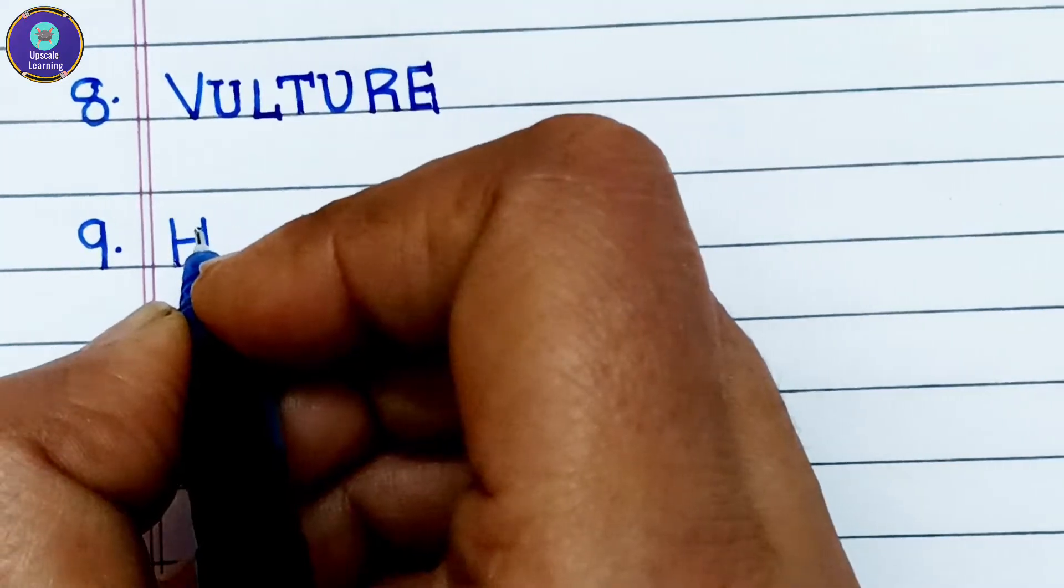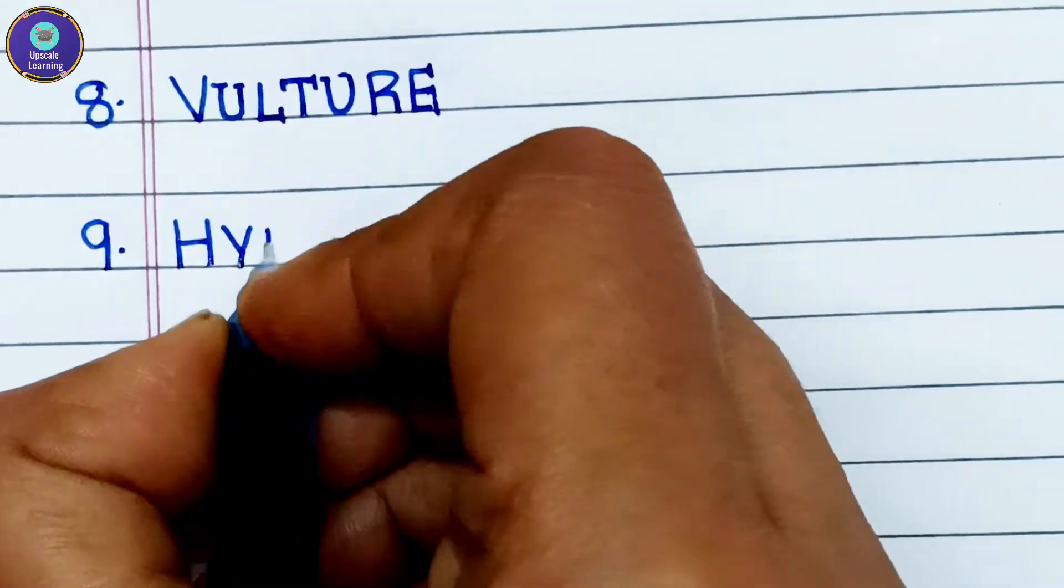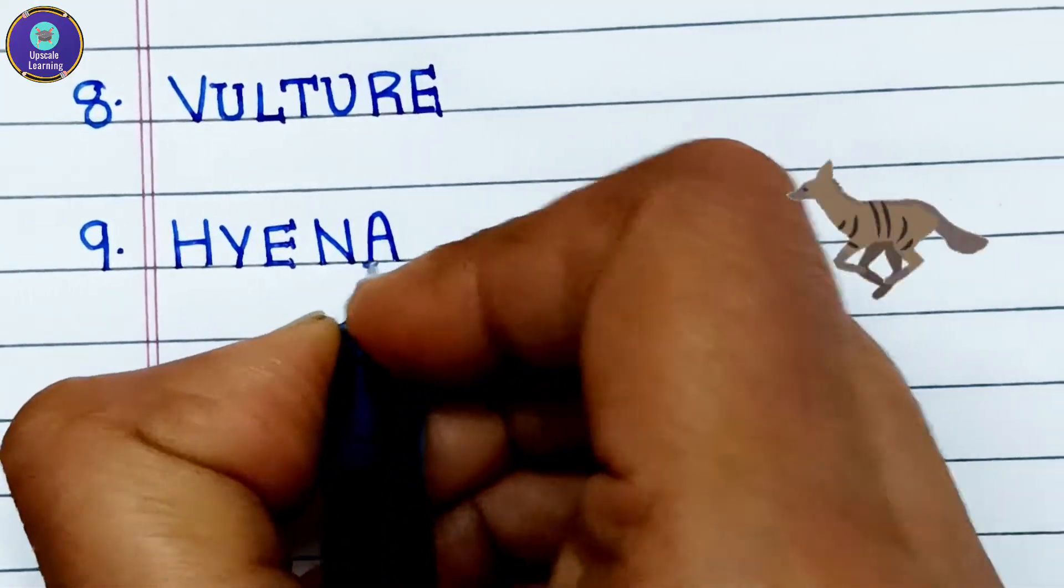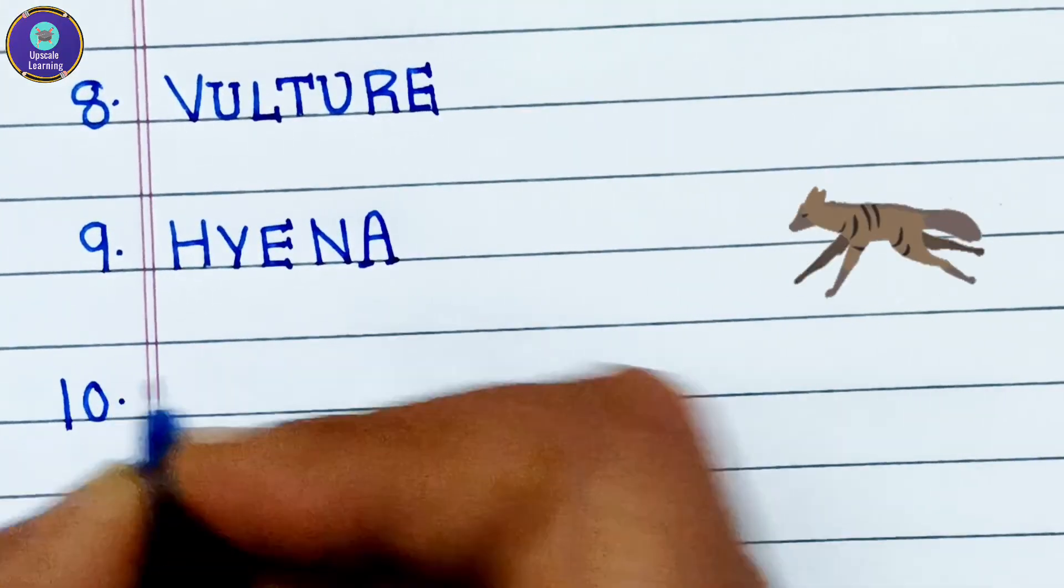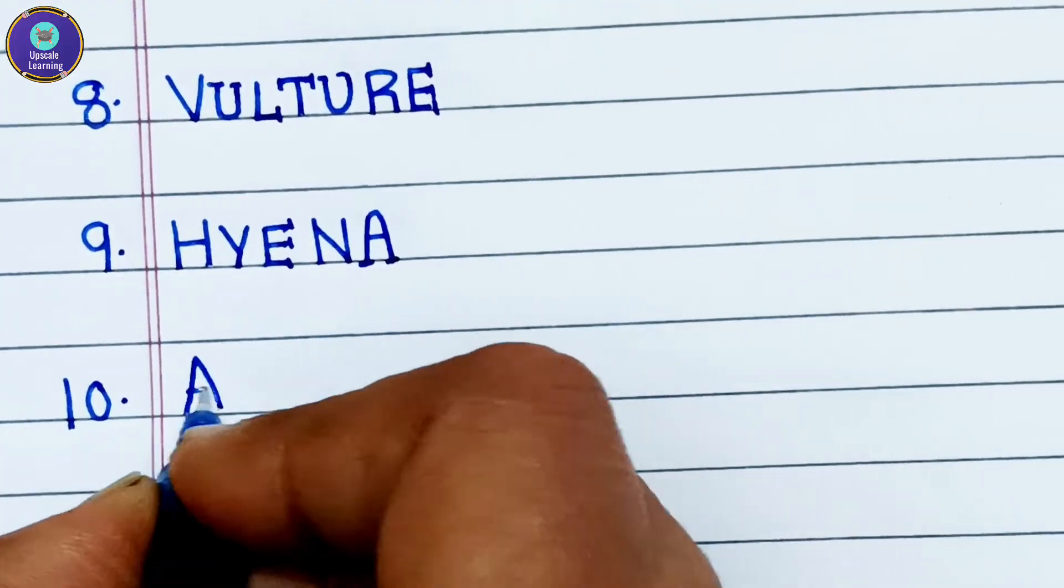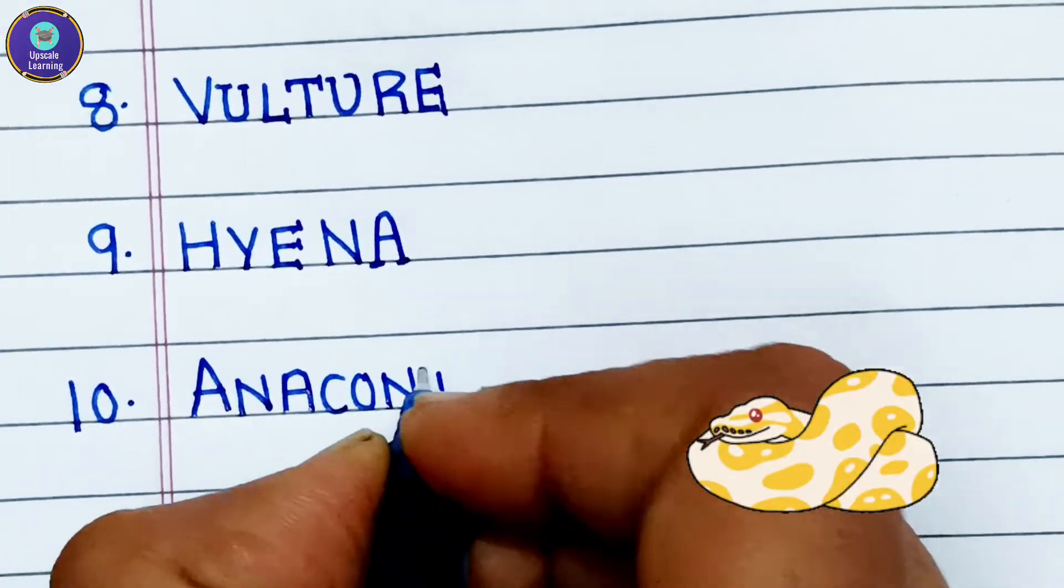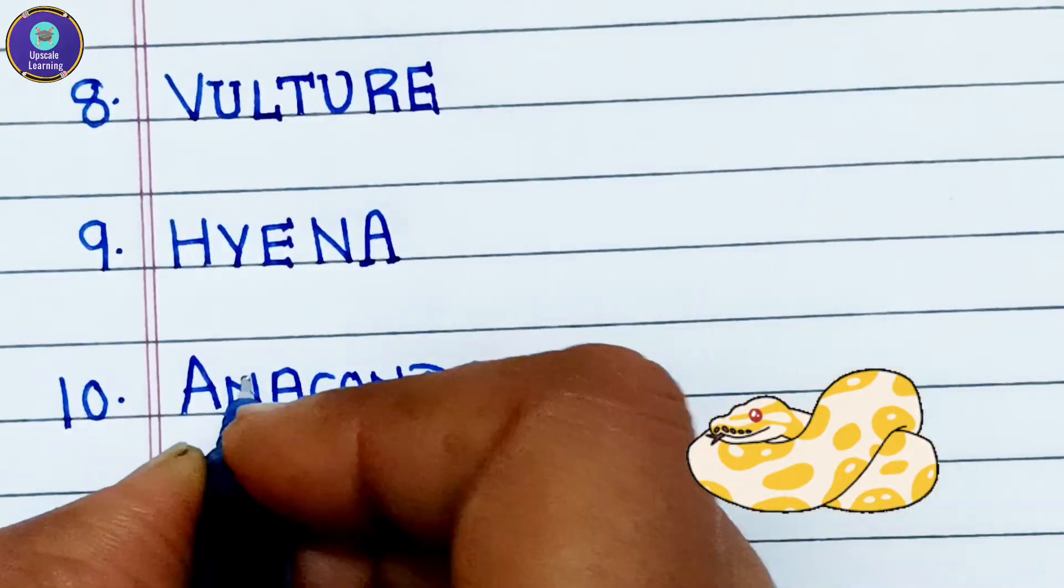Ninth one is hyena, H-Y-E-N-A, hyena. And tenth one is a reptile, anaconda, A-N-A-C-O-N-D-A, anaconda.